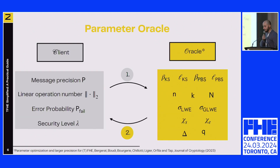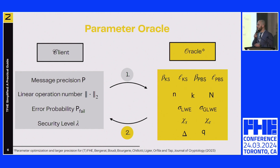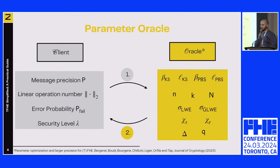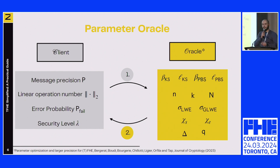The idea to simplify life when working with TFHE is to have a parameter oracle. The client provides information like the precision of the plaintext, the number of linear operations, the error probability, and the security level. From these inputs, the oracle returns the best parameters ensuring correctness, security, and the best performance.